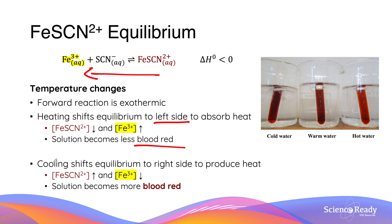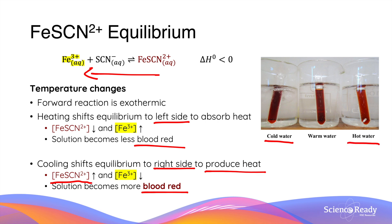Cooling has the opposite effect. At a lower temperature, the equilibrium position shifts to the right in order to produce heat by favouring the exothermic reaction. This increases the concentration of iron thiocyanate ion, making the solution appear more blood red. In the image on the right, you can clearly see different shades of blood red in test tubes submerged in different temperatures of water. The test tube in cold water has the darkest shade of blood red, while the test tube in hot water has the least intense shade, as heating shifts equilibrium left and decreases the iron thiocyanate complex concentration.